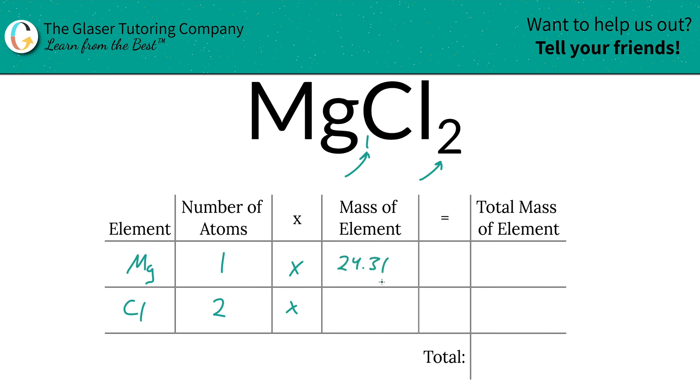So 24.31 for magnesium, 35.45 for chlorine.